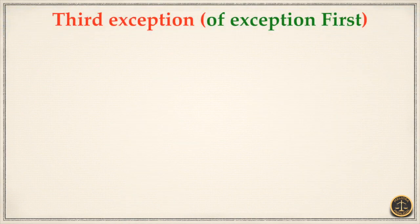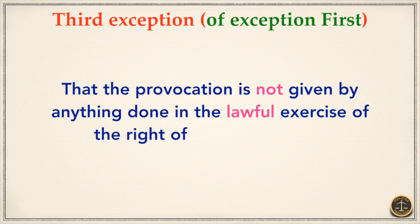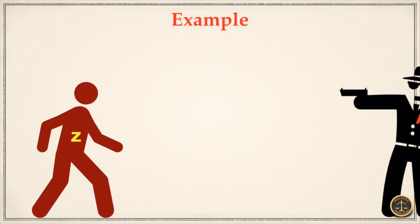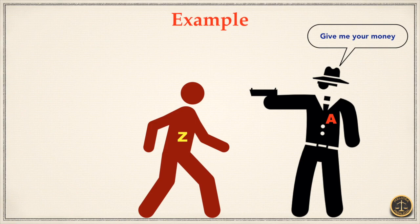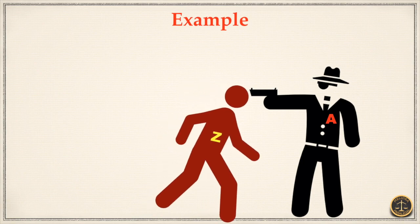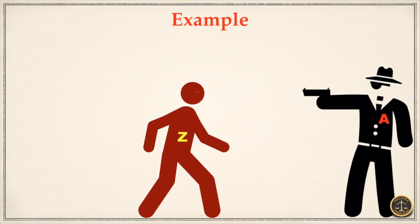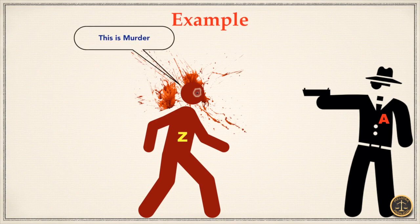Exception 3 of Exception 1: the provocation is not given by anything done in the lawful exercise of the right of private defense. For example: A, a robber, stops and threatens Z with intention to snatch his valuable property. Z, in the exercise of the right of private defense, stops A from doing so. A is moved to sudden and violent passion and fires his pistol on Z. Z dies. This is murder, inasmuch as the provocation was given by a thing done in the exercise of the right of private defense.